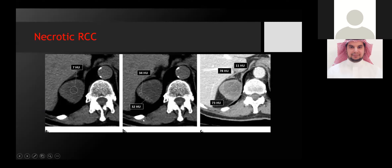Here is one example provided. You can see a right renal necrotic RCC because of the peripheral thick, ill-defined enhancing component and central non-enhancement.